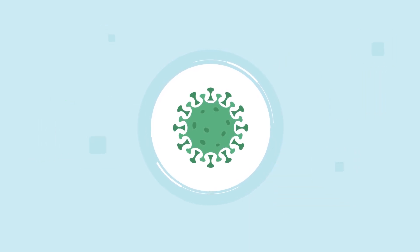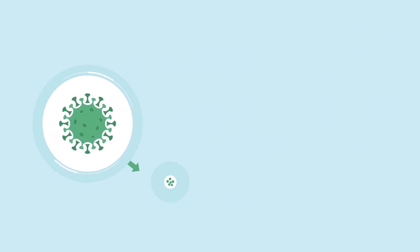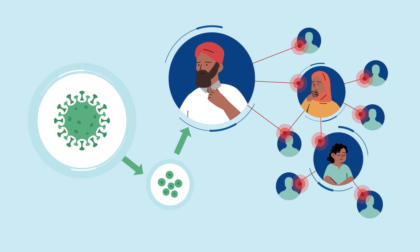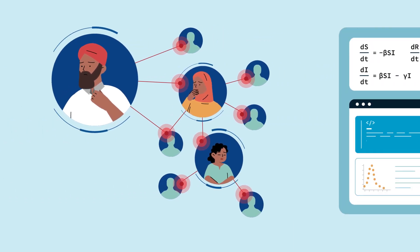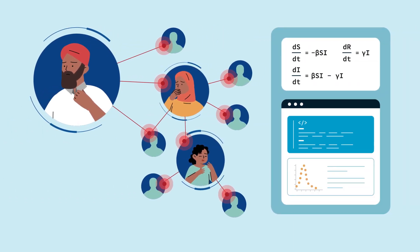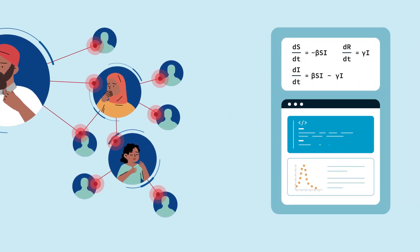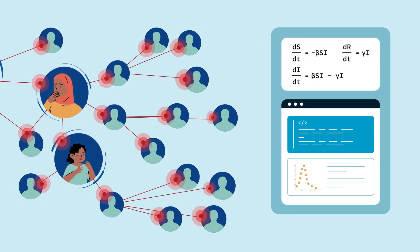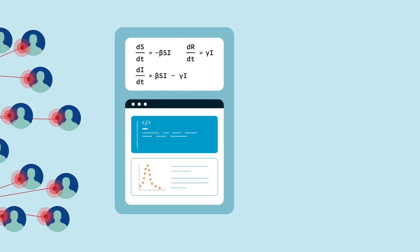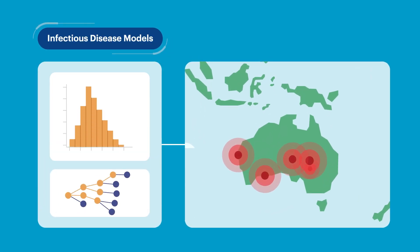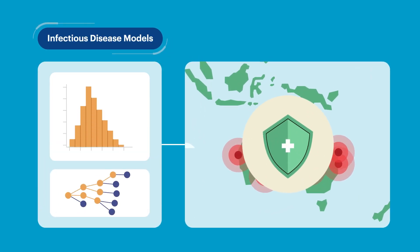If we know how an infectious disease develops and spreads, we can write models using mathematical equations or computer simulations that describe the spread of disease. These models simulate what could happen in an outbreak and how control measures might affect it.